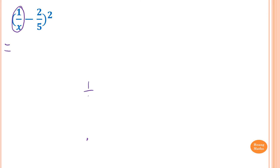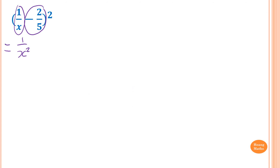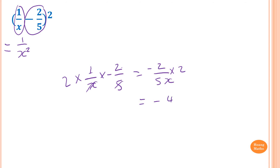To expand (1/x − 2/5)²: square 1/x first — 1/x times 1/x gives 1 over x². Then 1/x times −2/5: 1 times −2 is −2 over 5x. Don't forget to double it, so that becomes −4 over 5x.